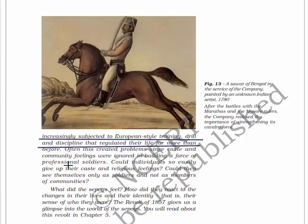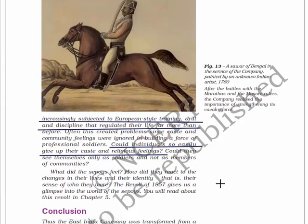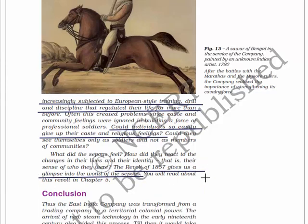Could individuals so easily give up their caste and religious feelings? Could they see themselves only as soldiers and not as members of their community? What did the sepoys feel? How did they react to changes in their lives and their identities - their sense of who they were? The revolt of 1857 gives us a glimpse into the world of the sepoys, which we are going to read about in the upcoming chapter. Here you will see a picture: 'A Savar of Bengal in the service of the company,' painted by an unknown Indian artist in 1780.